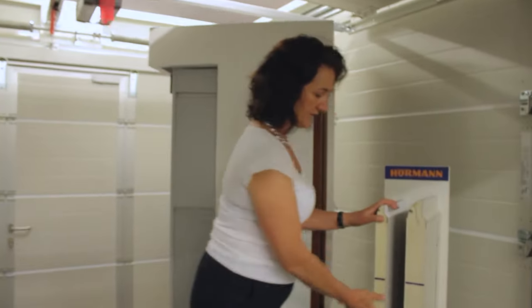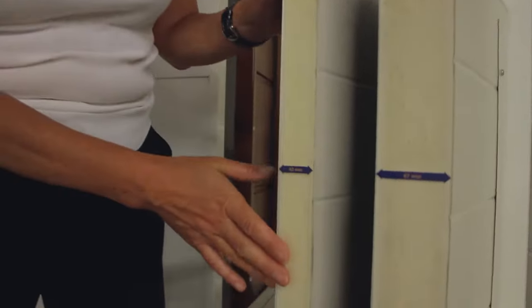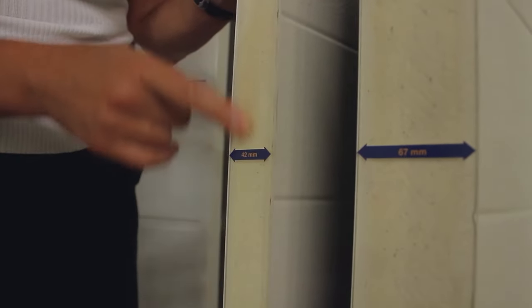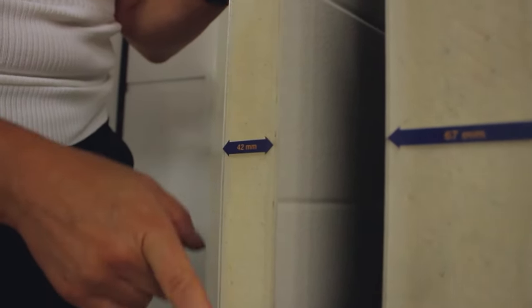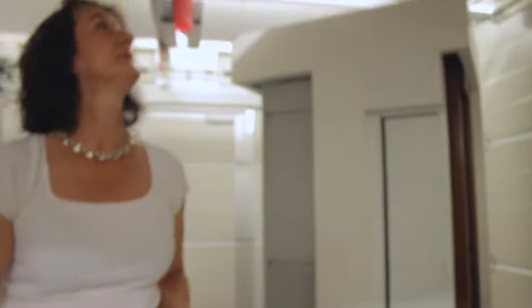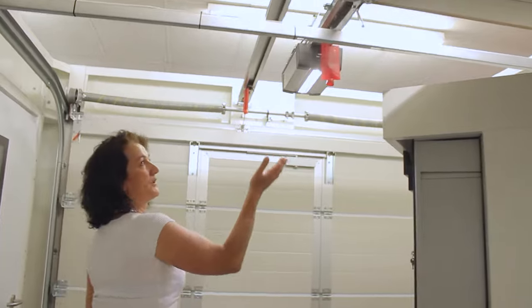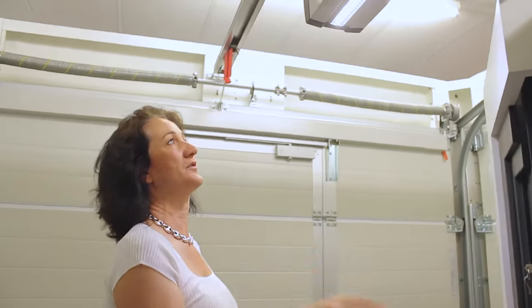This is the standard thickness. You can go thicker but we're looking at this one and this is the poly filling that you would get. Now looking up at the ceiling, this is the motor that we have in use on this particular sectional door.